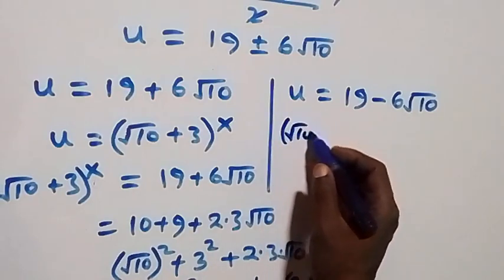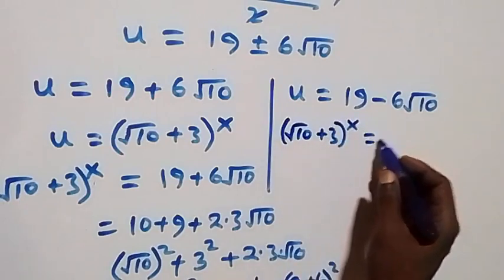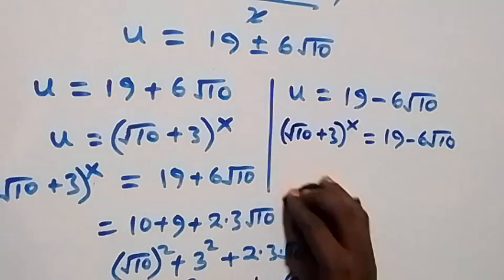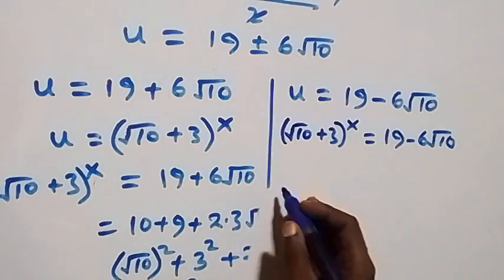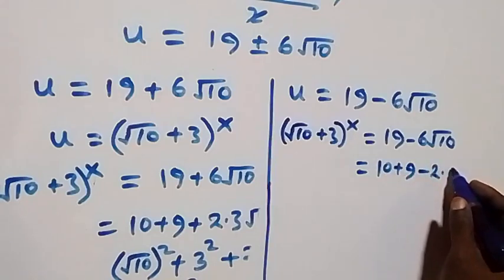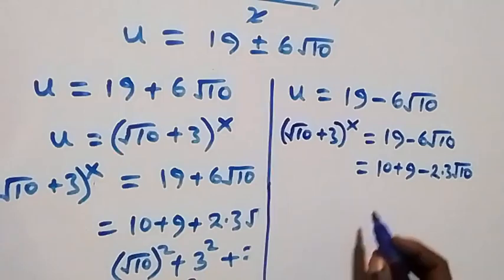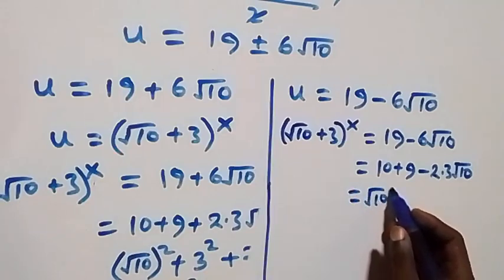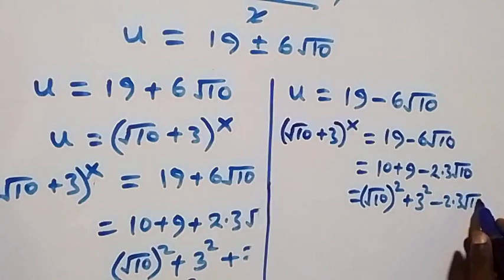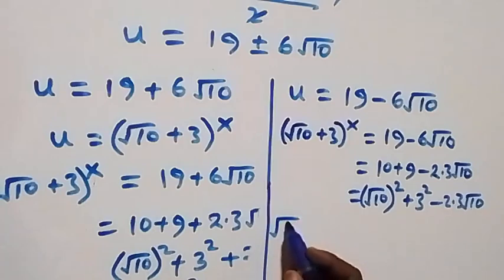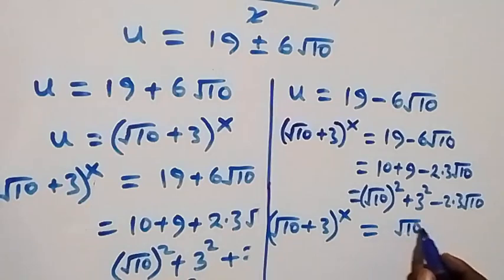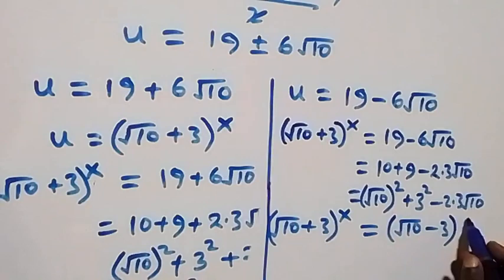For the second case, (√10 + 3)^x equals 19 - 6√10. We rewrite 19 - 6√10 as 10 + 9 - 2·3·√10, which equals (√10)² + 3² - 2·3·√10, giving (√10 - 3)².